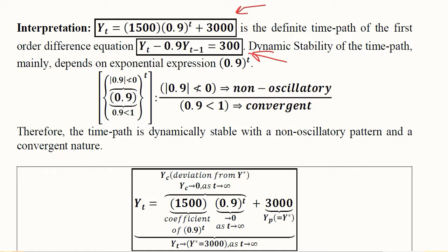This is the expression on which the dependence will take place of the dynamic stability. We know that we have to consider the actual value of the parameter a and the absolute value of parameter b.